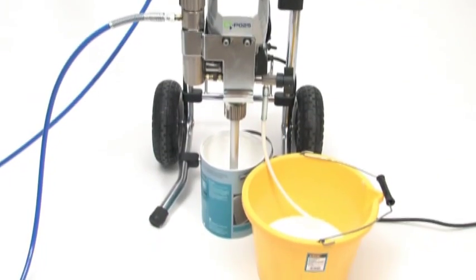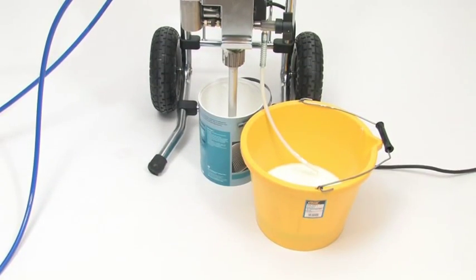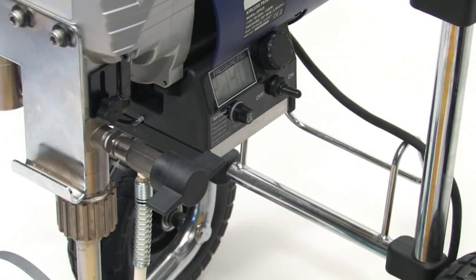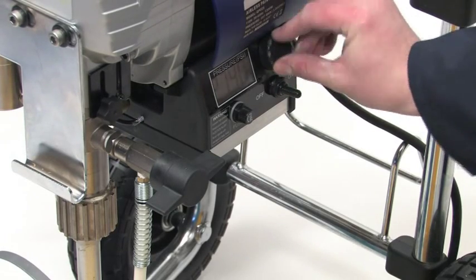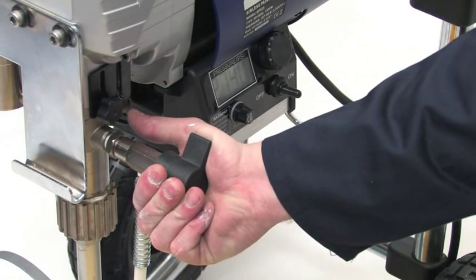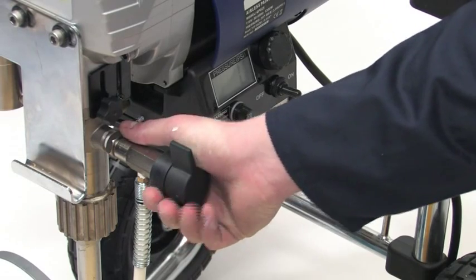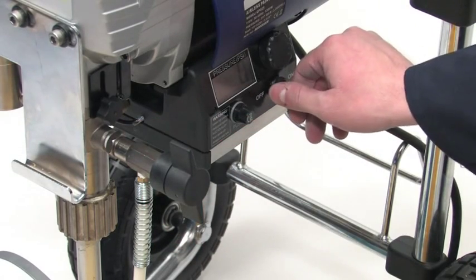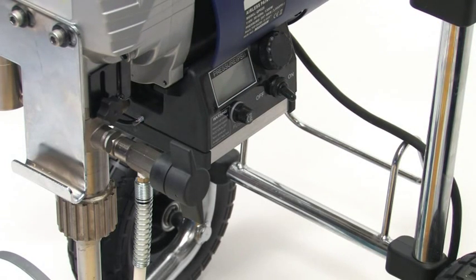When you have finished spraying, there's always cleaning up to do. But with Q-Tech sprayers, this is easier than you think. For shutdown and cleaning, when using water-based materials, turn the pressure control knob to the left and very slowly turn the spray prime valve back to the prime position to relieve the pressure in the system. Then turn the power switch to the off position. Always make sure the safety trigger catch on the gun is on.